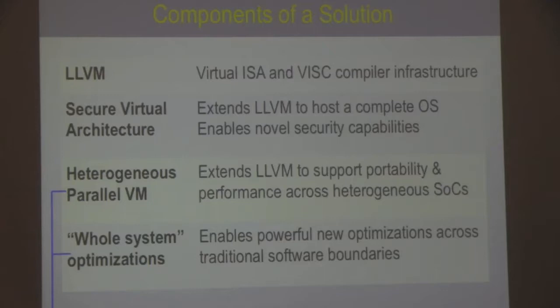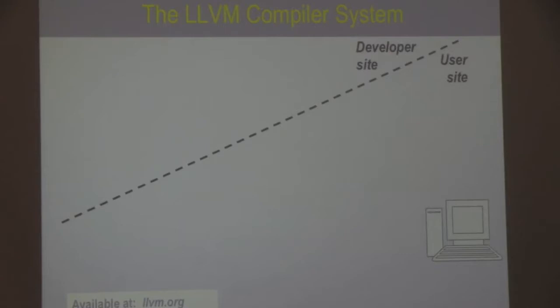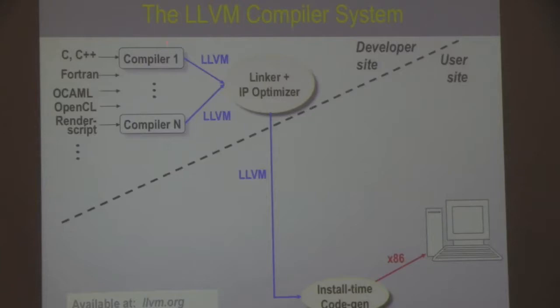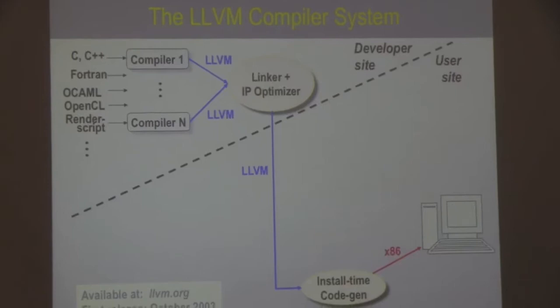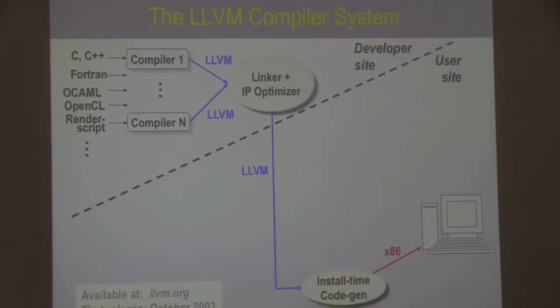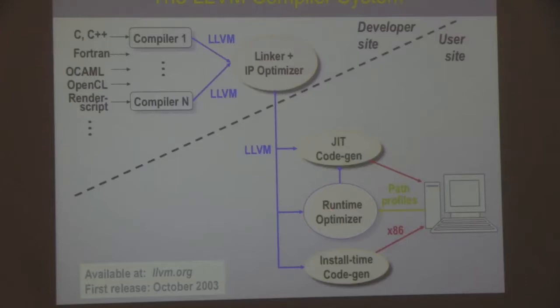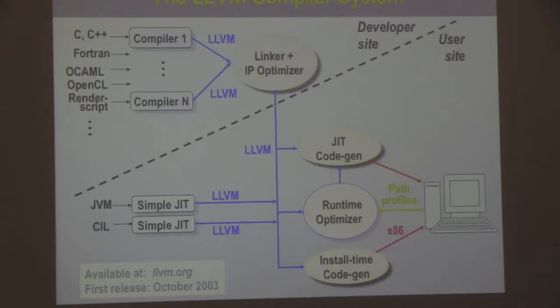LLVM is completely language-neutral — you can develop front ends for arbitrary programming languages that generate the LLVM internal representation, which is also a virtual instruction set. You can link them together, do interprocedural optimization across file boundaries at link time, then ship the code as LLVM code since it is a full self-contained executable architecture. That code can be translated to machine code at install time, JIT-compiled, or further optimized at runtime. There is a commercial — actually open-source — implementation of .NET called Mono from Novell built on top of LLVM.